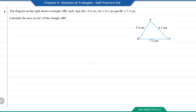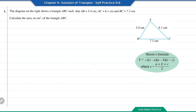Here the lengths of all 3 sides of triangle ABC are given. Therefore, we can find the area of ABC using Heron's formula. First, we are going to find the semi-perimeter S, which equals 5.4 plus 6.1 plus 7.3 divided by 2, which is equal to 9.4.